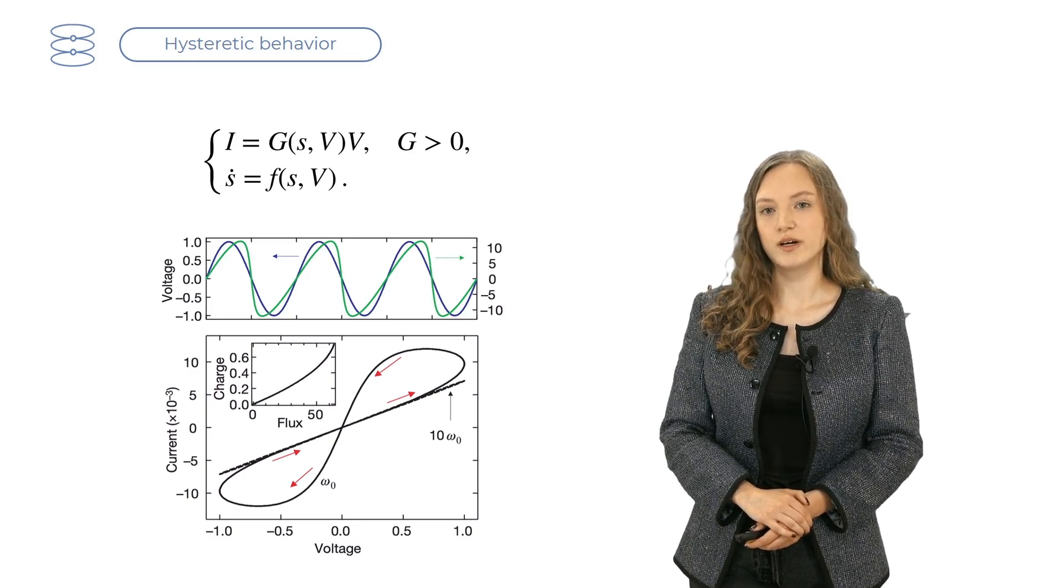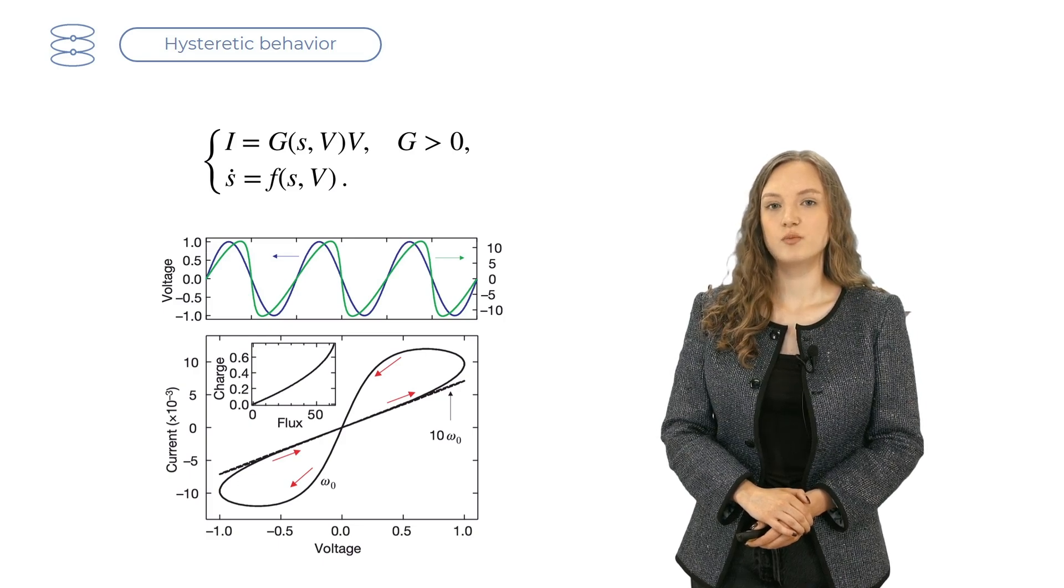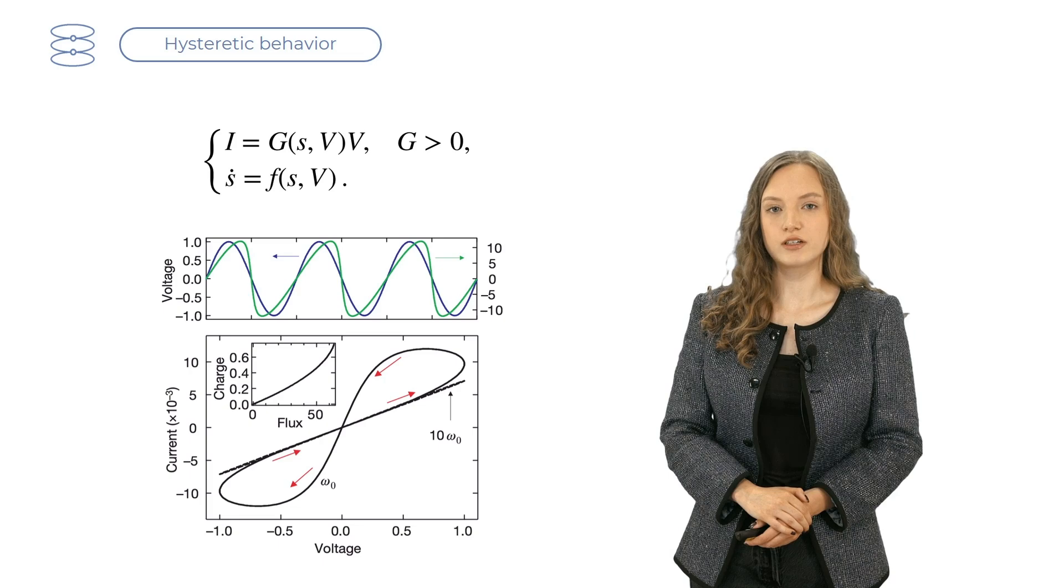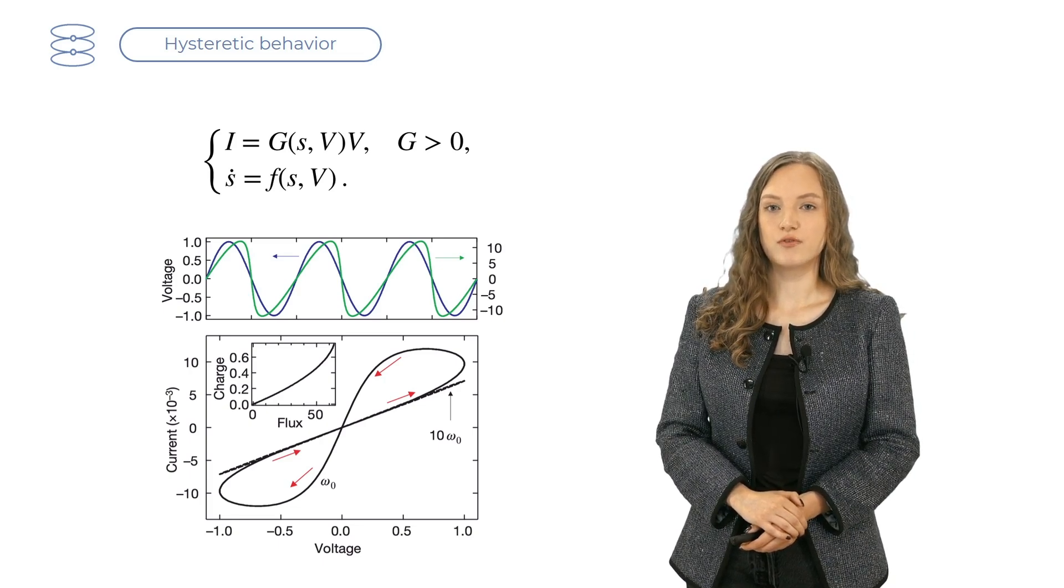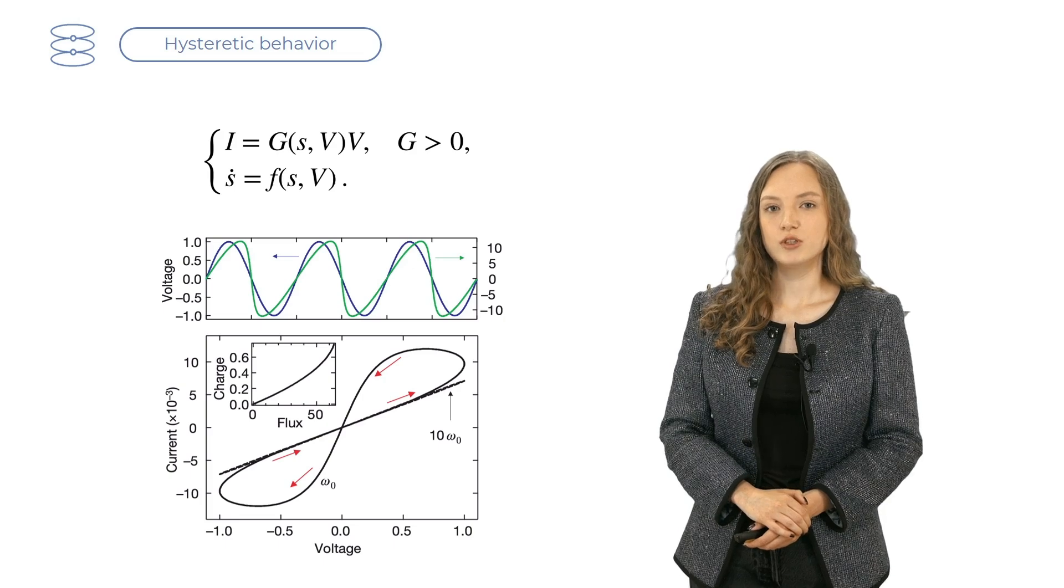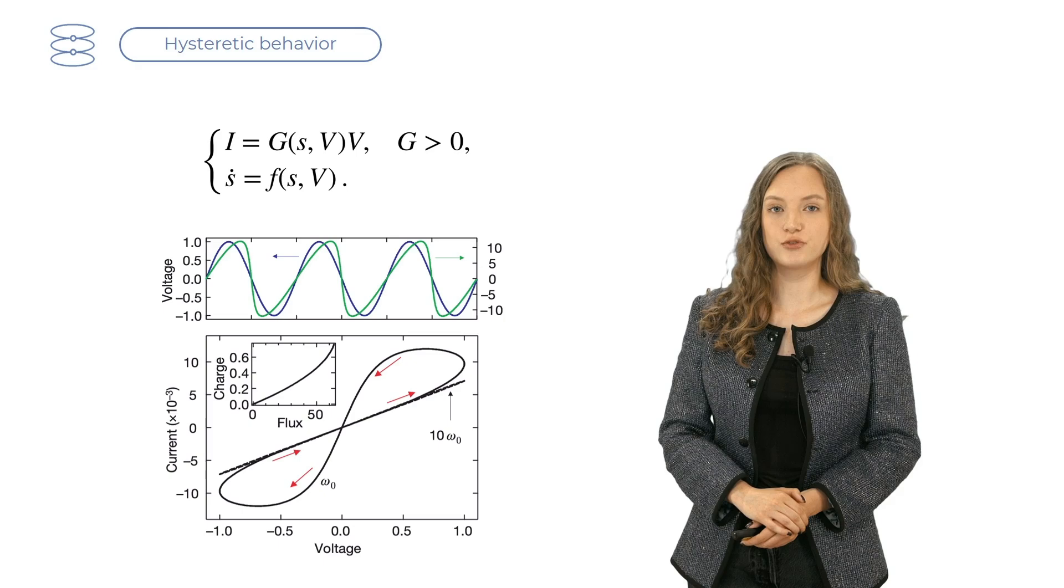And in fact, it is clear why it has to be so, because in absence of memory effects, there would be an ordinary single-valued function. Here, since the resistance depends on the history of the flow charge, for a given voltage, we can have two different currents.